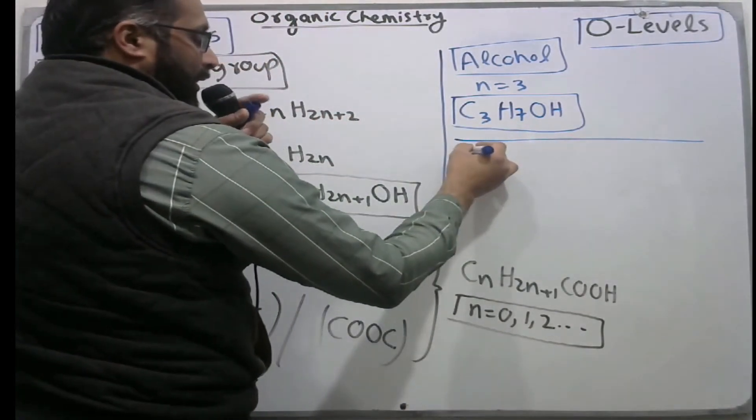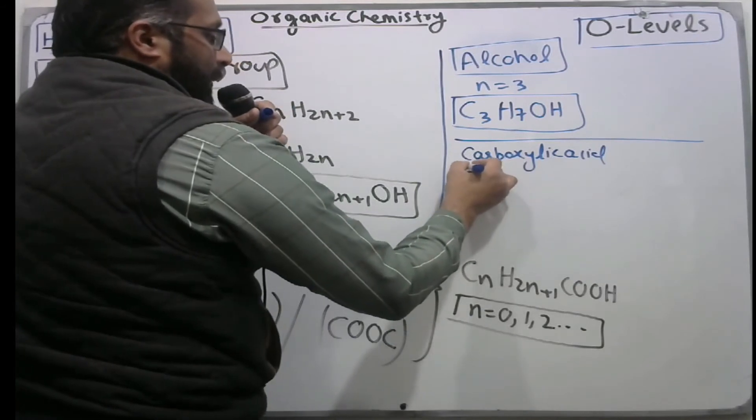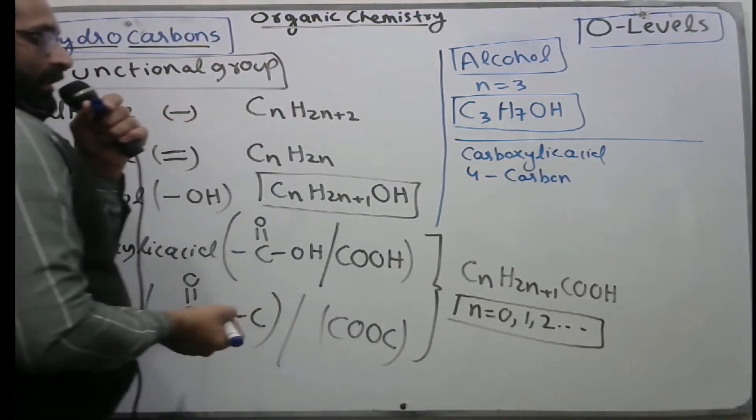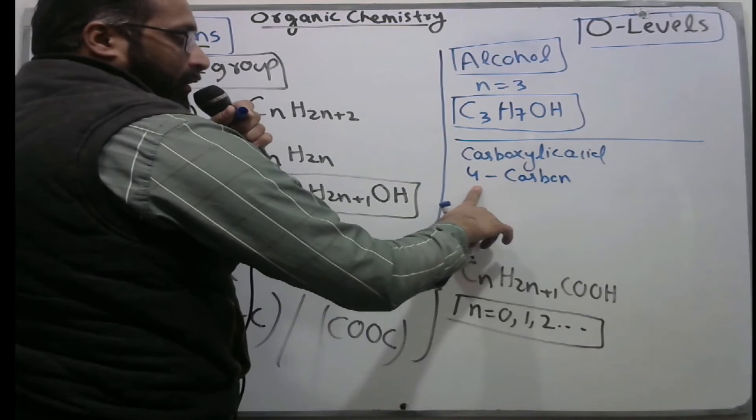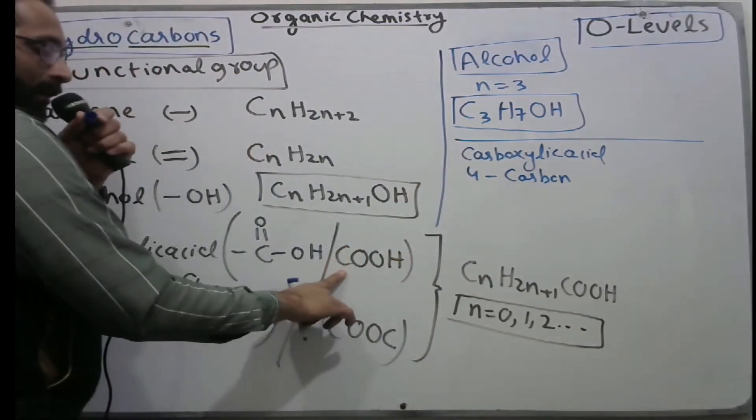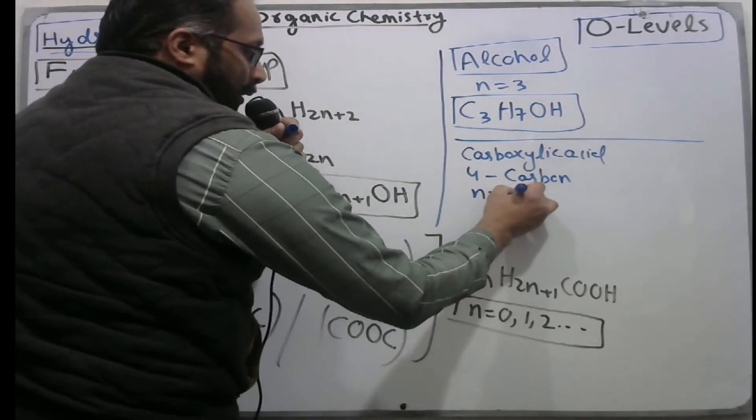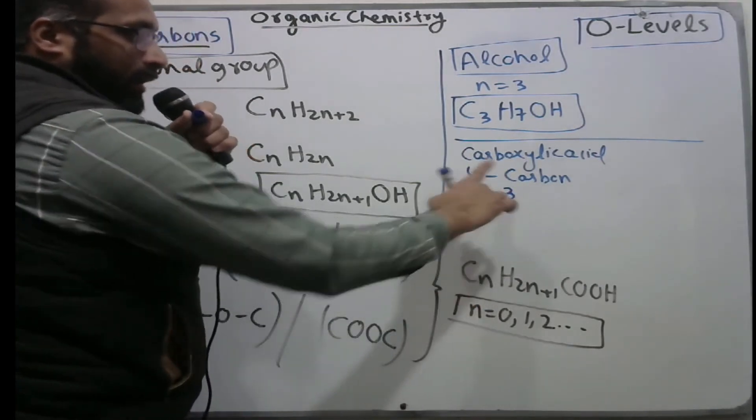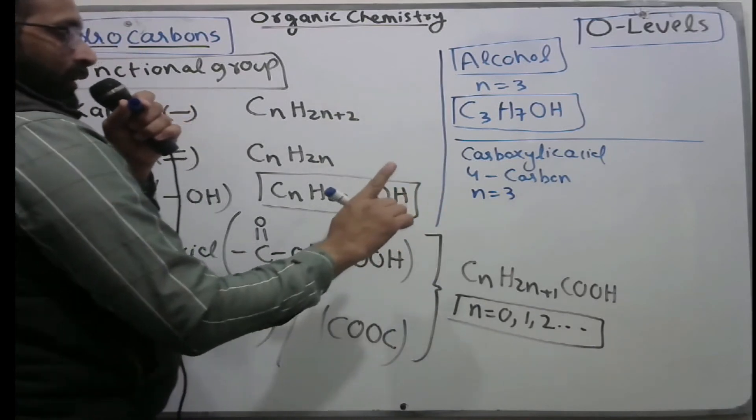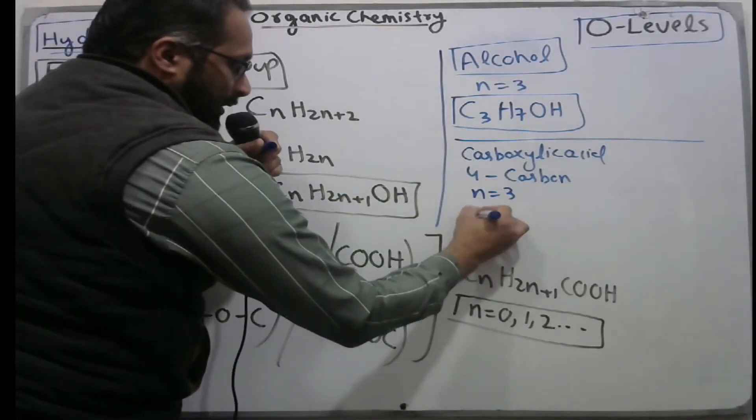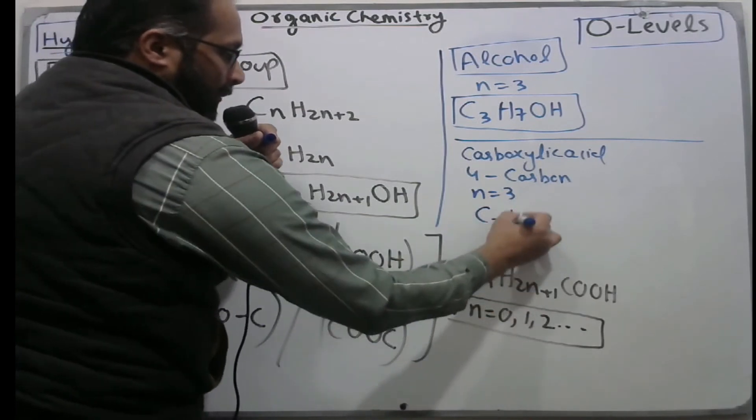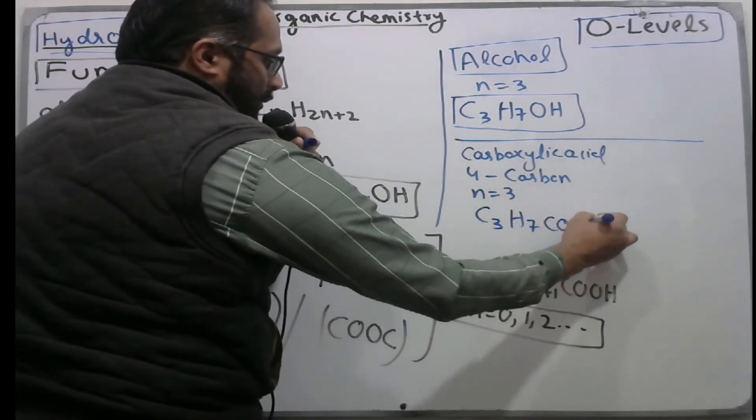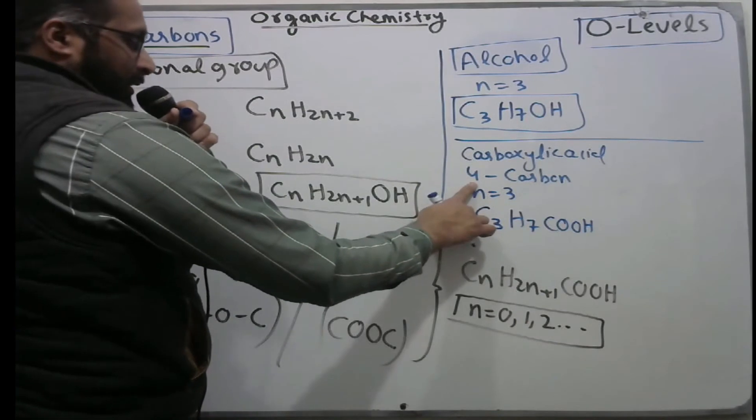For carboxylic acid, write the formula having four carbon atoms. You have to put n one less because one carbon is already there in carboxylic acid. So for four carbons, put n equal to three in this formula. Put three here, you got C3: two times three is six, plus one equals seven, and COOH. Now count the carbon atoms - there are four carbons.